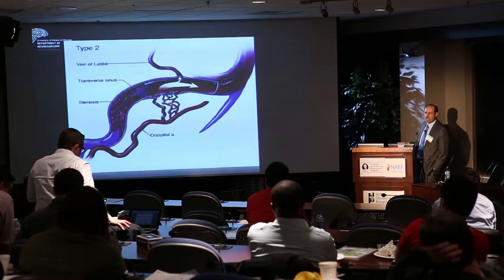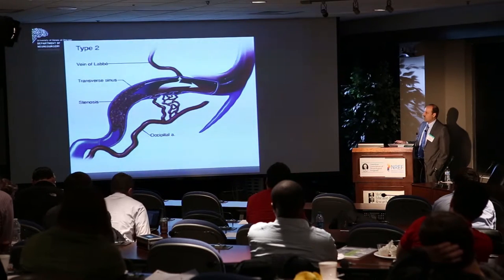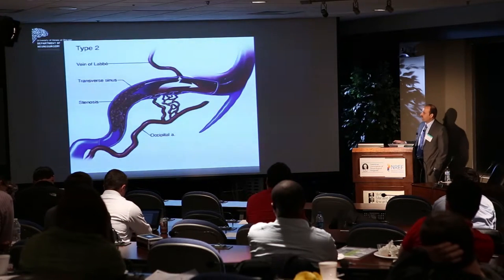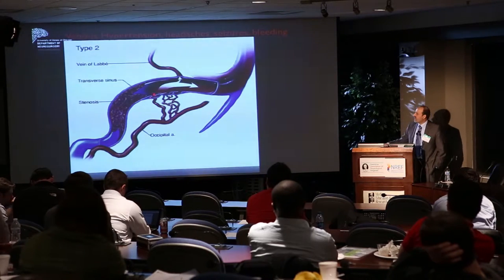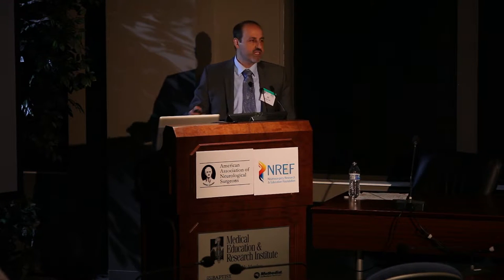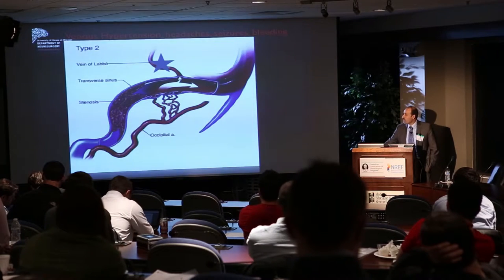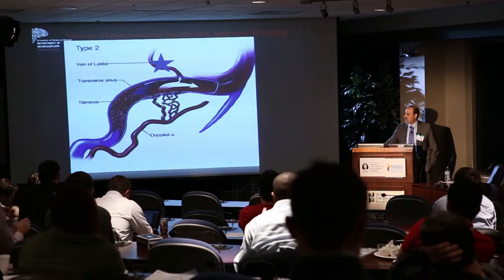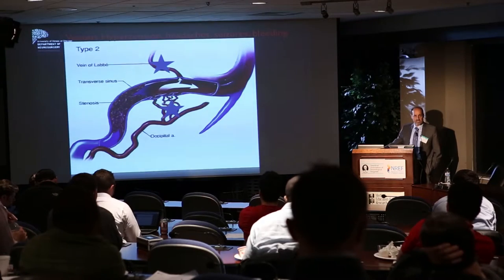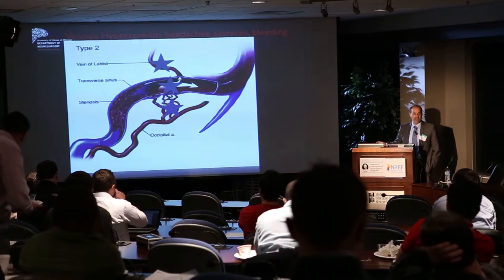Type 2 is more complex: feeder vessels go into the sinus, and there is venous reflux into cortical veins. With that cortical vein under pressure, you get venous hypertension, headaches, seizures, and bleeding. Treatment requires disconnecting where the venous reflux occurs—either at the venous side (less durable if the fistula remains patent), by disconnecting feeders on the arterial side, or by sacrificing a non-functional sinus, which is probably the more durable option.